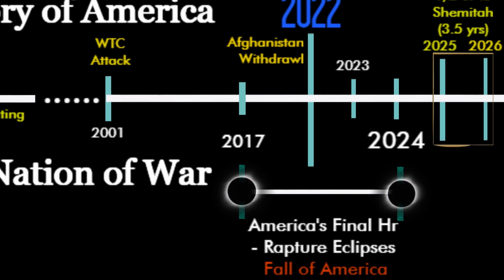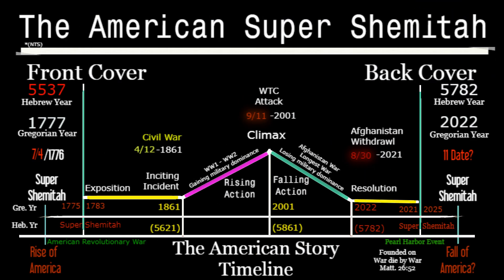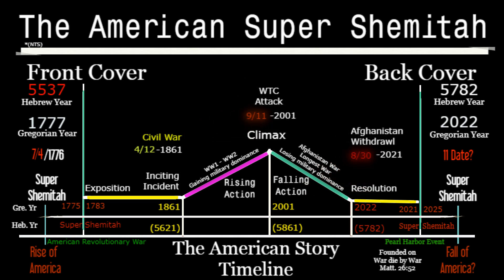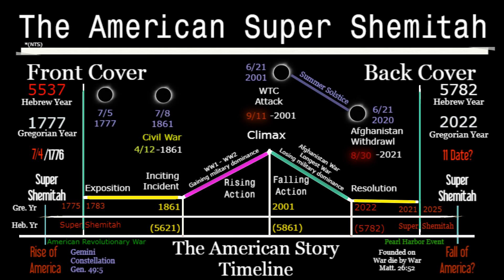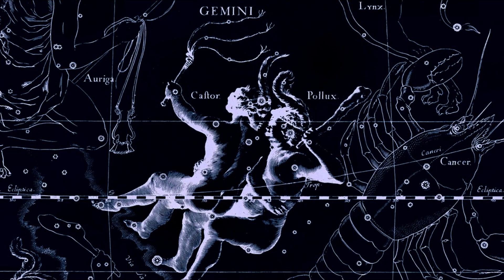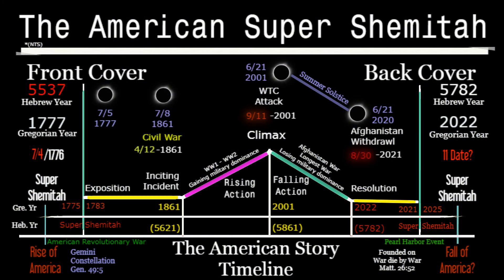These events of war occur on Shemitah years, with two having a profound connection to the number 11. Now let's bring in the celestial aspect — an astronomical event that repeats every time one of these events takes place, as a celestial confirmation in sync with a calendar pattern. In the context of America, this is symbolized — and we'll prove this biblically — by the sun in the constellation of Gemini.